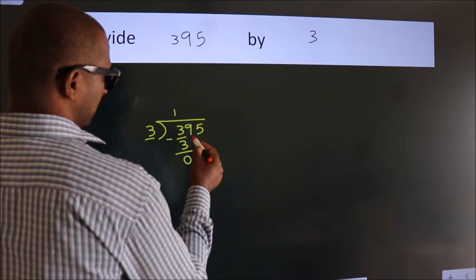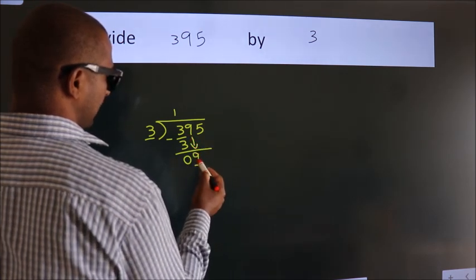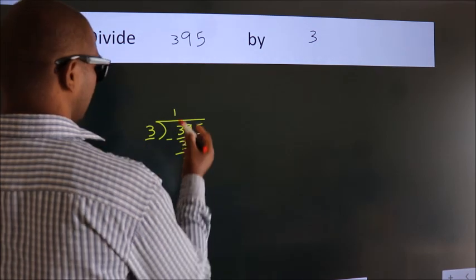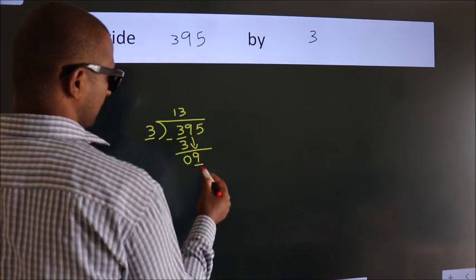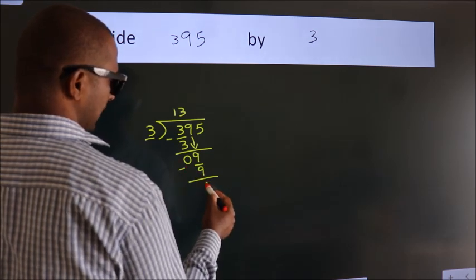After this, bring down the beside number. So 9 down. When do we get 9? In the 3 table, 3 times 3 is 9. Now we subtract. We get 0.